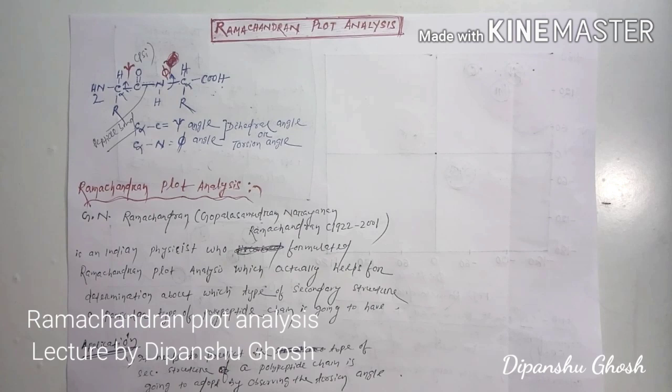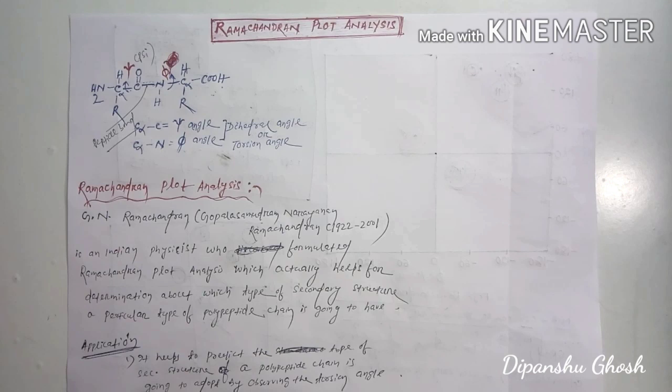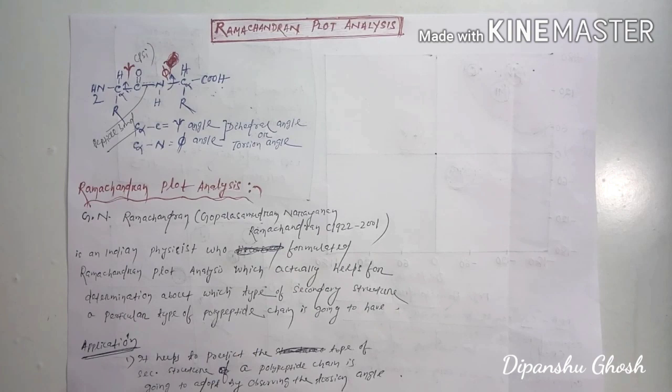Hello friends, welcome back to my channel. Today we are going to talk about a very important topic in biochemistry — Ramachandran plot analysis. It is very important for CSR life sciences exam and also for concept building if you are a biochemistry student. I suggest you first watch my last video regarding dihedral angle or torsional angle, then come back to this video. Links are in the description.